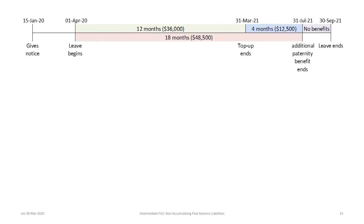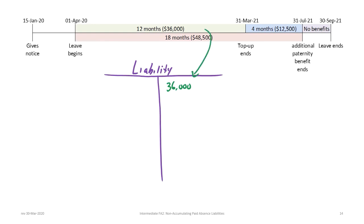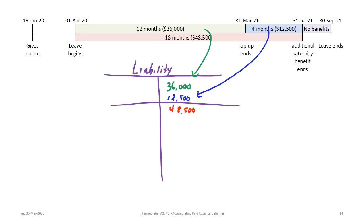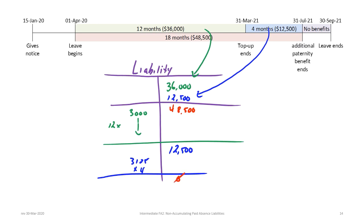Here's a summary of what happened in this problem. We loaded the liability with $36,000 for the top-up and $12,500 for the additional parental leave, giving a total of $48,500. Then for 12 months we drew $3,000 each time, leaving an ending balance of $12,500. Finally, $3,125 times four months brought the ending balance to zero. That confirms the liability account is fully settled at the end of the leave period.